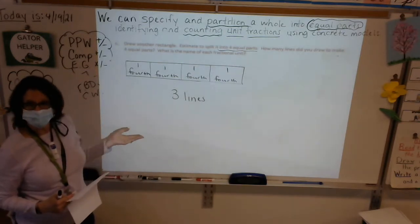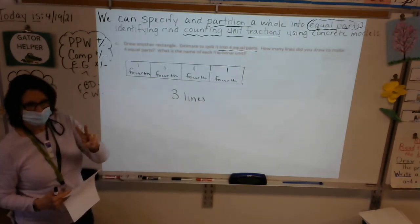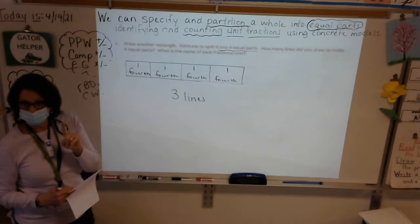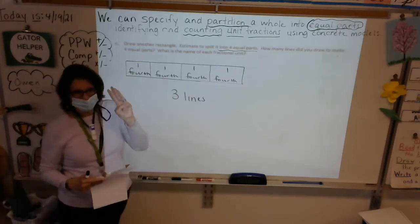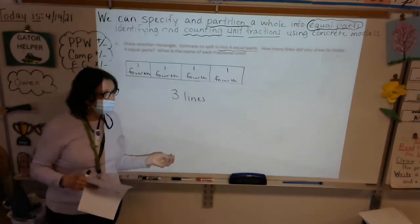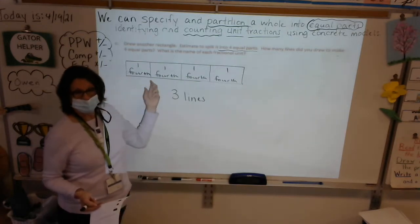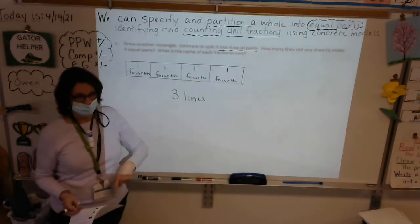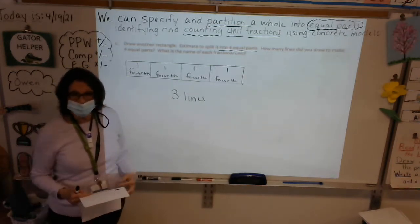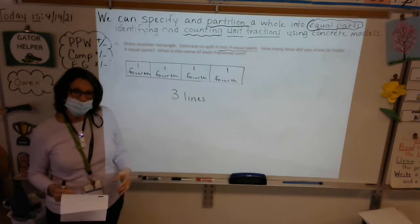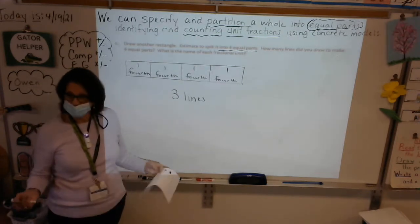Let's look at those three questions. When you made two equal parts, how many lines did you draw? One. Three equal parts — how many lines? Two. Four equal parts — how many lines? Three. So talk with your neighbor: if you need to make five equal parts, how many lines will you draw?